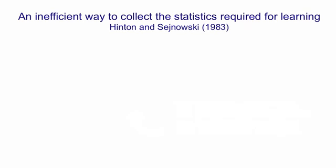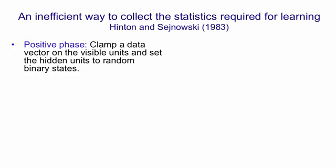Now in order to run this learning rule, you need to collect those statistics. You need to collect what we call the positive statistics, those are the ones when you have data clamped on the visible units, and also the negative statistics, those are the ones when you don't have data clamped and that you're going to use for unlearning. An inefficient way to collect these statistics was suggested by me and Terry Sejnowski in 1983.